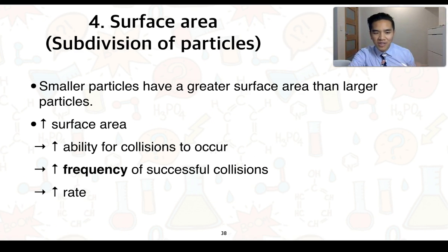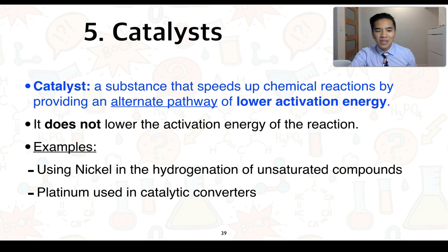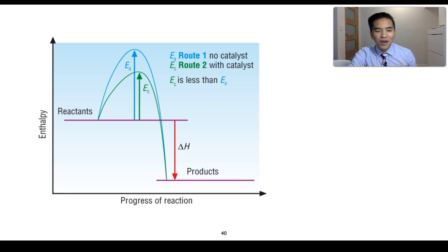For our last factor: a catalyst is a substance that speeds up chemical reactions by providing an alternate pathway of lower activation energy. Keep in mind this doesn't lower the activation energy of the normal reaction - it just provides a different route of lower energy. Examples include nickel used in the hydrogenation of unsaturated compounds like triglycerides, converting them to saturated compounds, and platinum used in catalytic converters. We can look at the effect of catalysts on an energy profile diagram.